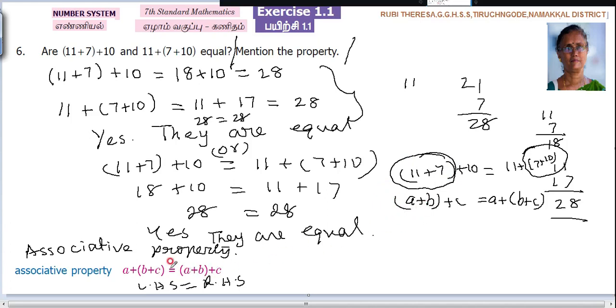If you have space, LHS, RHS. No problem. If you tell associative property, you can write it. If you have space, you can write it. Left hand side, right hand side. Why? Both are equal. No problem.